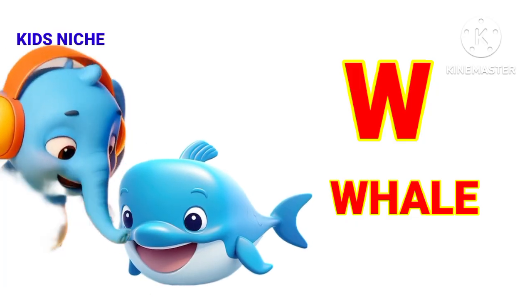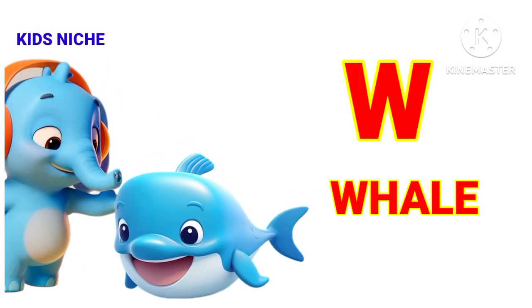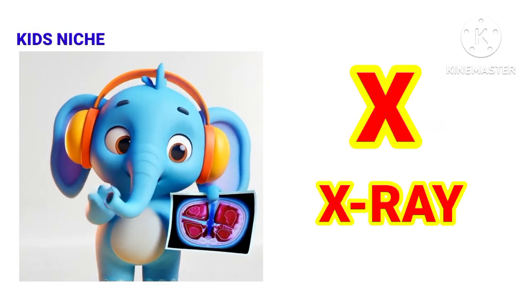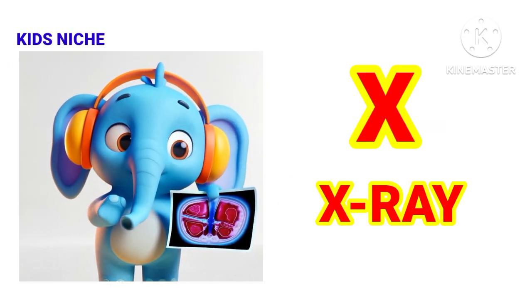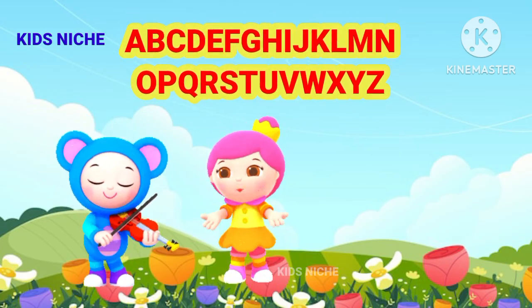U is for umbrella for rainy days. V is for violin, the music plays. W is for whale swimming in the sea. X is for x-ray, look inside of me. Let's sing our ABCs!